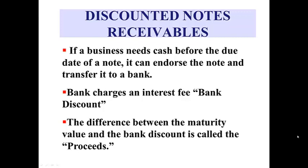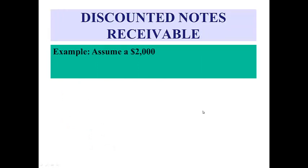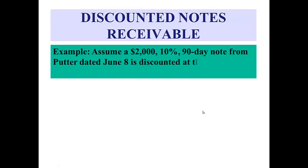One of the calculations you will be responsible for in chapter 13 is discounting notes receivables. Sometimes a business has a notes receivable and may need its money before the due date. One option is to sell the note to a bank. The bank charges an interest fee, or a bank discount, and the difference between the maturity value of the note and the bank discount is called the proceeds. Assume a $2,000, 10%, 90-day note from Putter was dated June 8th and was discounted at the bank on July 8th at 12%. The business did not want to wait 90 days to get its money, so they found a bank willing to discount it at 12%.